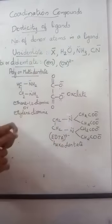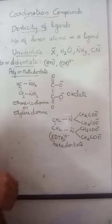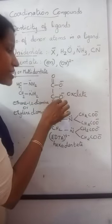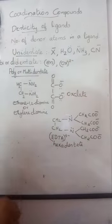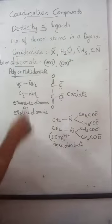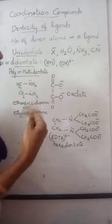So these donor atoms contain one or more lone pairs of electrons. Through this donor atom, the ligand is directly bonded to the metal atom. So these two are examples of bidentate ligand - two donors.